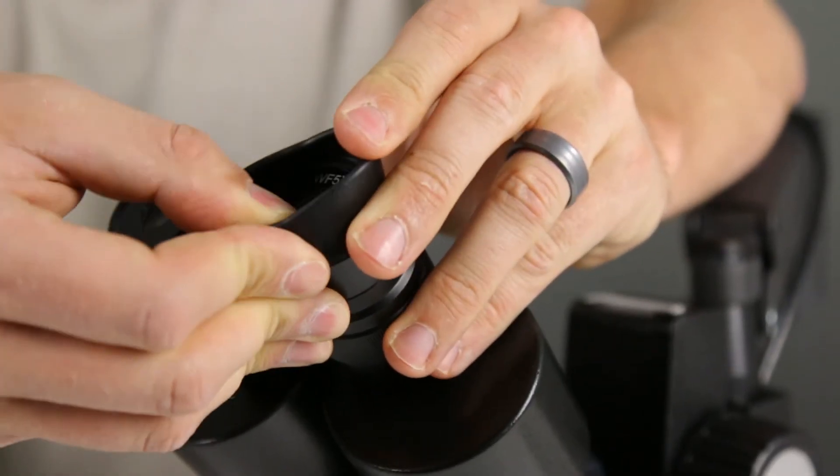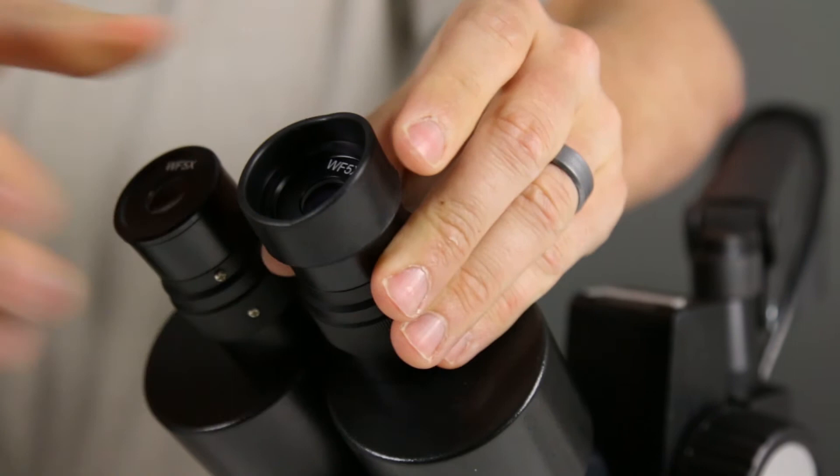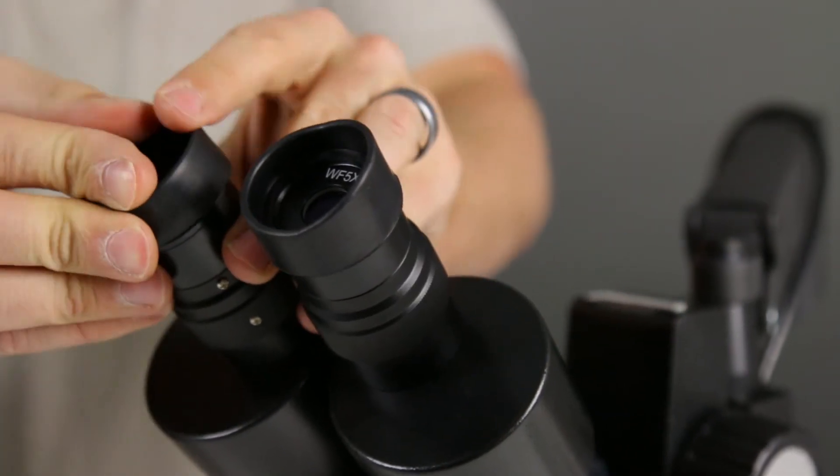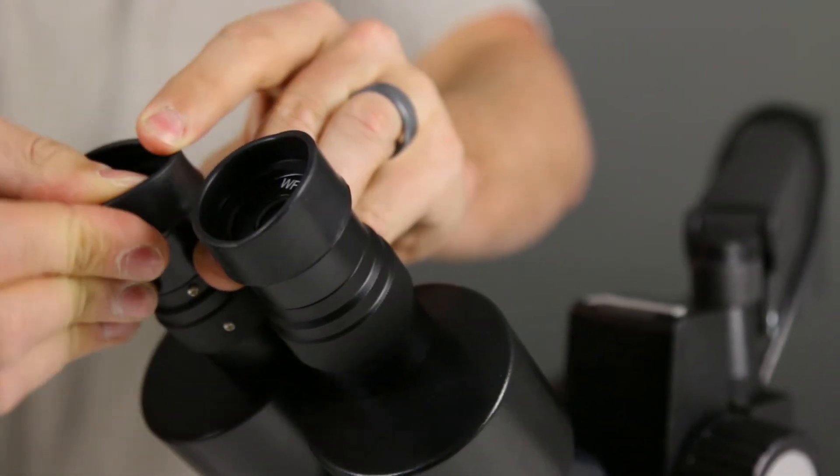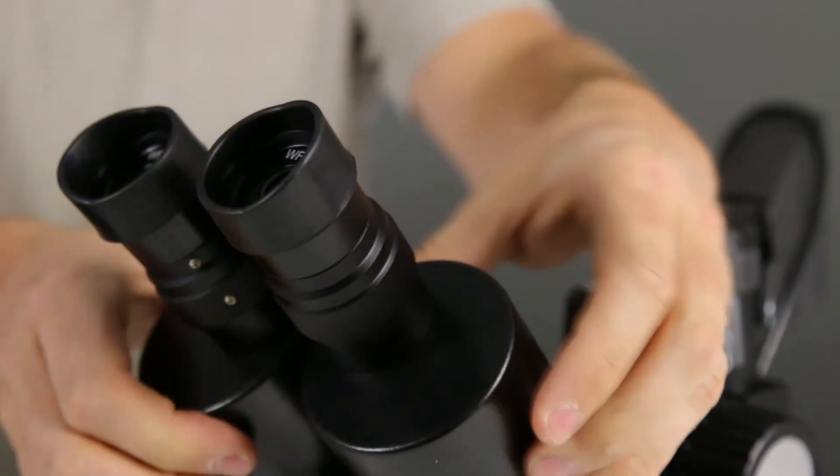Place the eye covers over the eyepieces of the microscope and focus the microscope to your desired settings. This will be easiest once the stylus is set in place and will give you something to focus on.